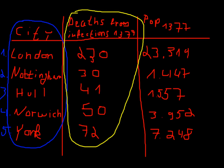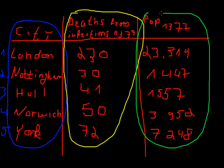And the population in 1377, this is our explanatory variable. This is our explanatory variable. We are trying to explain the deaths from infections in 1377 by the population in an English city in the year 1377.